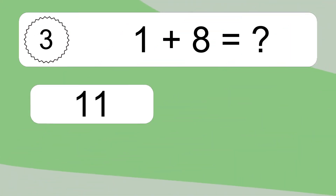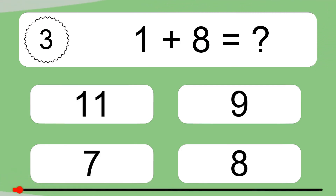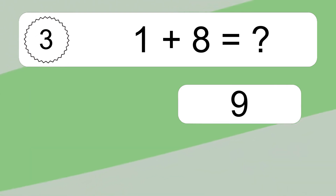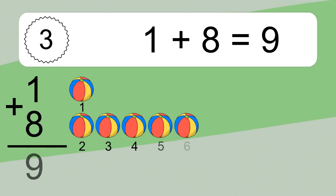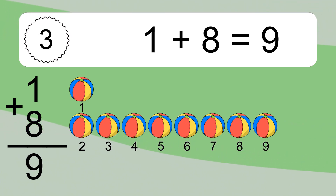1 plus 8 equals what? 1 plus 8 equals 9. Let's count it: 1, 2, 3, 4, 5, 6, 7, 8, 9.